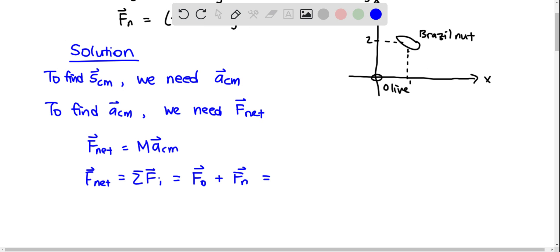We just put down the given forces, and then you get negative i hat plus j hat newtons.